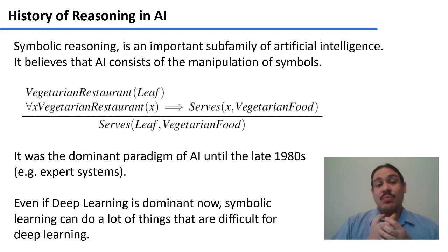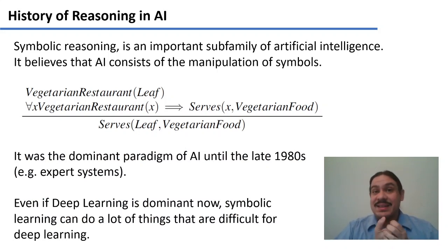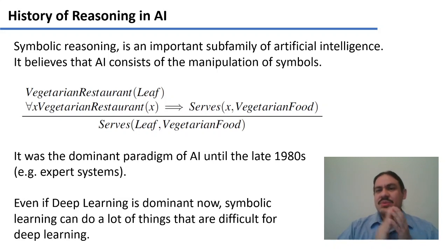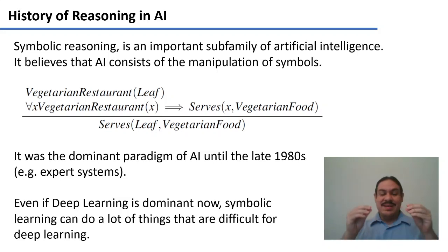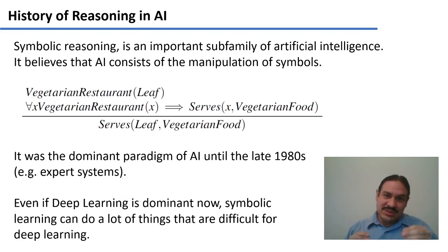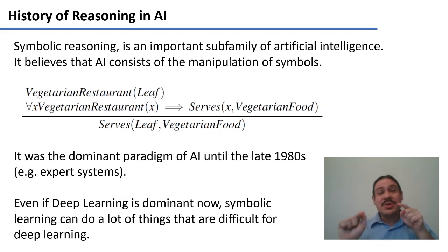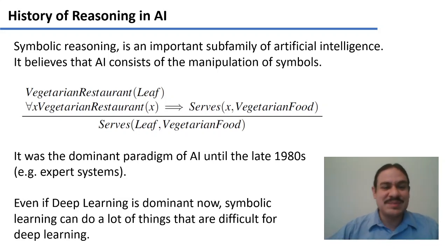This type of reasoning was the dominant paradigm in artificial intelligence until the late 80s. People designed what were called expert systems, which were supposed to extract the knowledge of a human expert about a field — for example, some disease — and then encapsulate it into a series of rules so that the computer could ask you some questions, you provide the answers, and then it would provide an expert diagnosis.